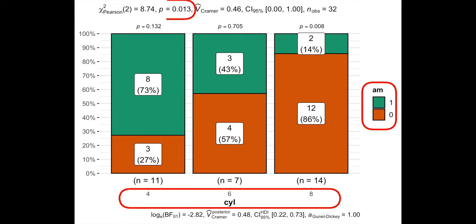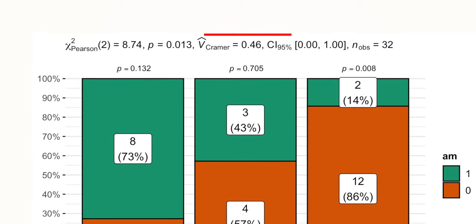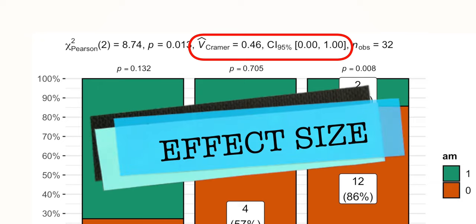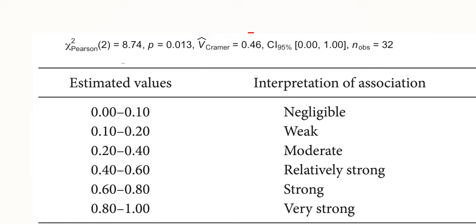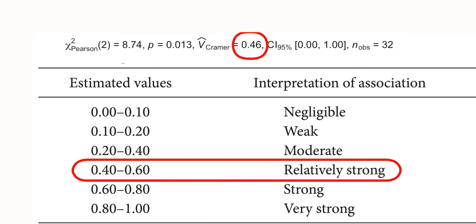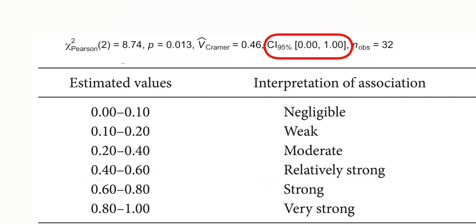However, p-value doesn't say how strong this relationship is. That's why we have v-Cramer value with its 95% confidence intervals as the effect size next to p-value. Our effect size of 0.46 indicates a relatively strong relationship, which supports the conclusion made by the p-value. The confidence intervals do not make much sense though, since v-Cramer goes from 0 to 1 anyway.